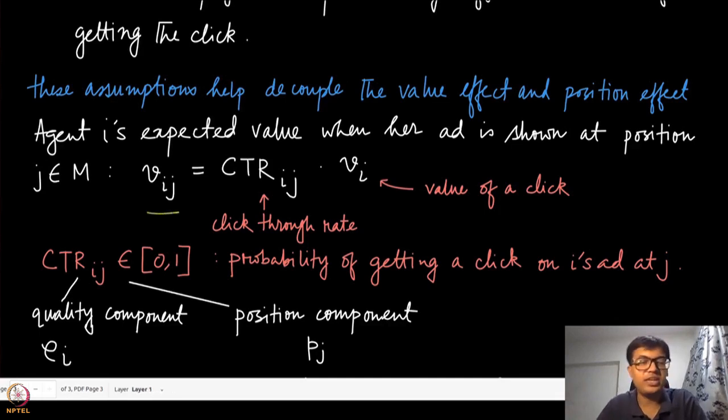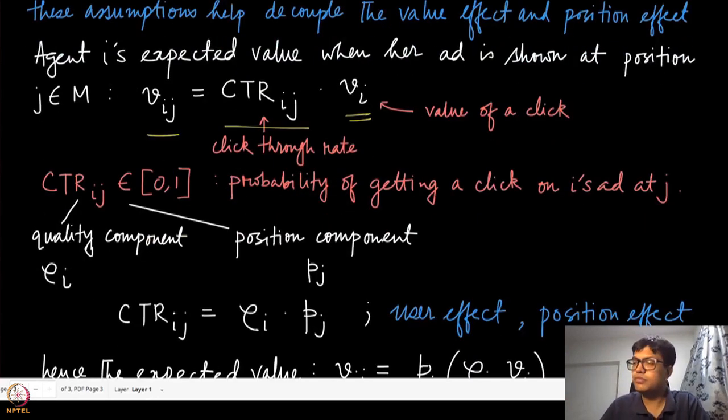The valuation VIJ of agent i when its ad is shown on the jth slot can be written as VI, the value of the click which is not dependent on position. The click-through rate CTR_IJ is dependent on both the agent's identity and the position. If that particular advertiser has a very relevant ad, then the quality component or context component is very significant. And of course the position of that ad is also important to estimate the probability of getting that click.